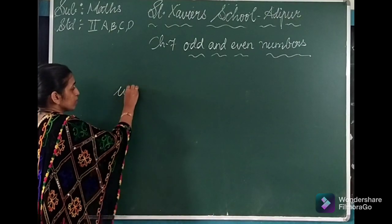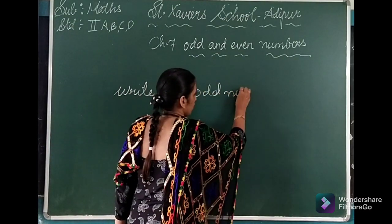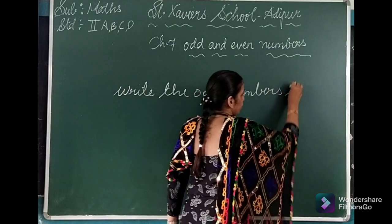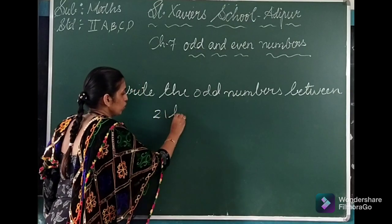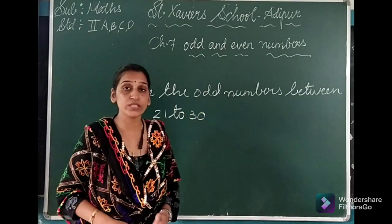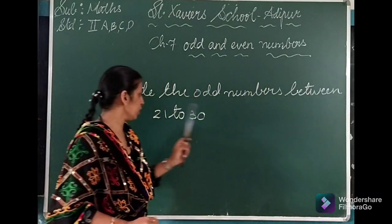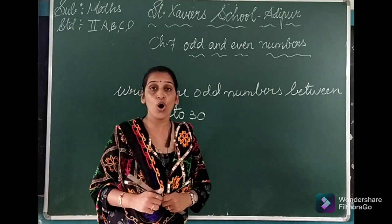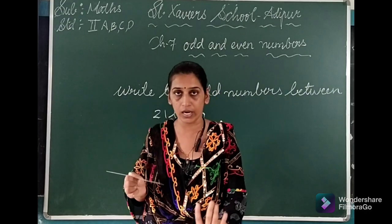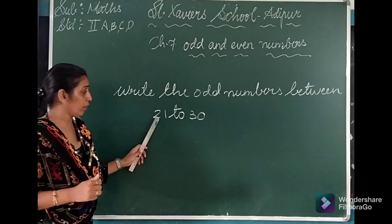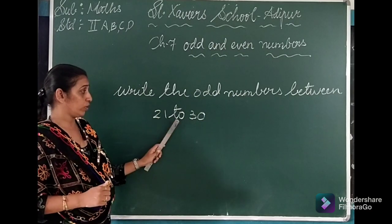Pay attention on the board. What I am saying: write the odd numbers between 21 to 30. We know odd numbers end in 1, 3, 5, 7 and 9. So here, we are collecting the portion — we are identifying the odd numbers between 21 to 30.